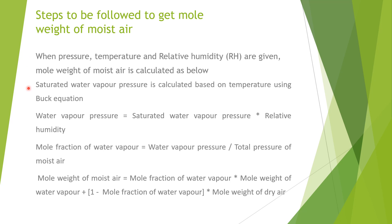First of all, saturated water vapor pressure is calculated based on temperature using the Buck equation. Once saturated water vapor pressure is calculated, water vapor pressure is calculated, which is equal to saturated water vapor pressure multiplied by relative humidity. Then mole fraction of water vapor equals water vapor pressure divided by total pressure. Then molecular weight of moisture equals mole fraction of water vapor into molecular weight of water vapor, plus (1 minus mole fraction of water vapor) into molecular weight of dry air.